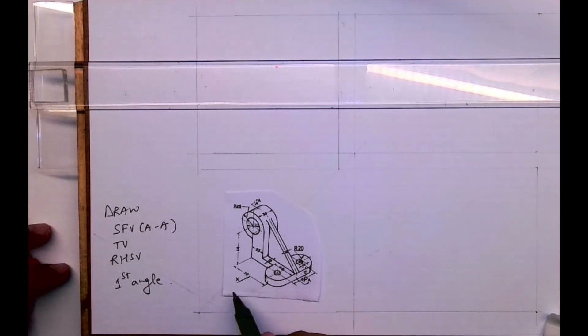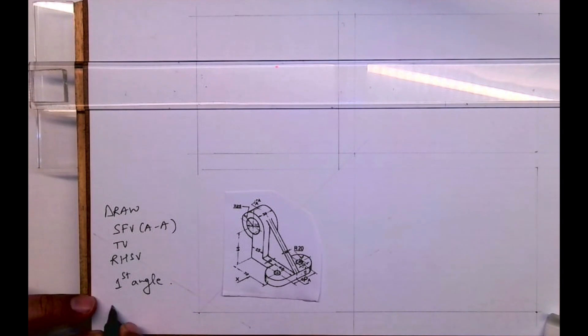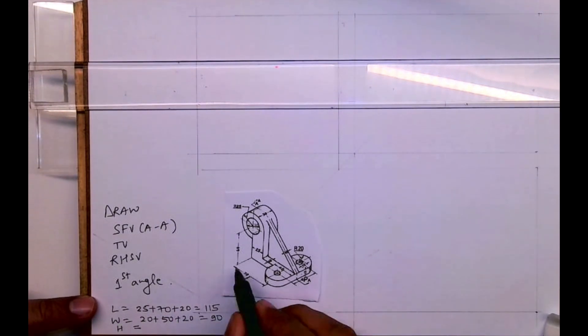We'll see the length, width and height. Length is 25 plus 70 plus 20, which is 115. Width is 20 plus 50 plus 20, which is 90. And height is 60 plus 25, which is 85.